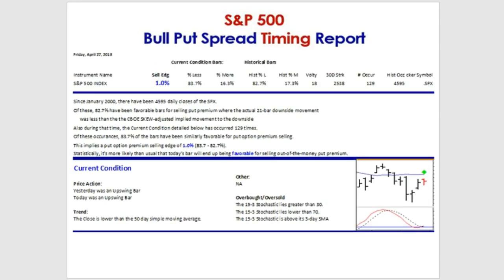Now let's go to the Bull Put Spread Timing Report, which assumes you're looking to sell put premium 30 days away, roughly a standard deviation out of the money. We've had 4,595 daily closes of the SPX. Of those, 82.7% turned out to be favorable for selling put premium because the actual 21-bar downside movement was less than what the options were implying, measured by the skew-adjusted VIX. With our current market condition of 129 occurrences, 83.7% turned out to have been favorable.